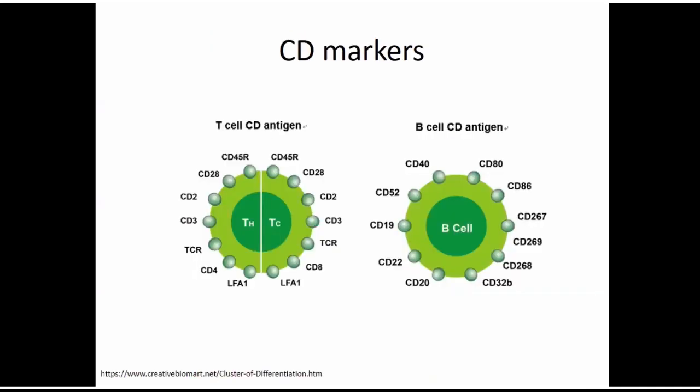This is just an example of all the different markers we see on a T cell versus a B cell. The majority of them start with the letters CD followed by a number.